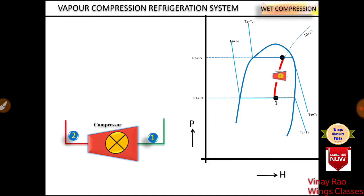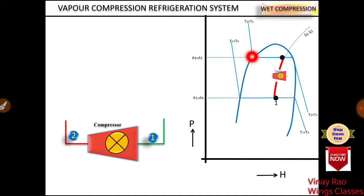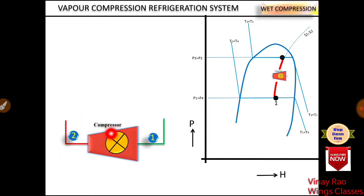This is the isentropic compression process from 1 to 2, where we follow the isentropic line. Due to compression, there is an increase in pressure from P1 to P2 and an increase in temperature from T1 to T2. So 1 to 2 is isentropic compression.